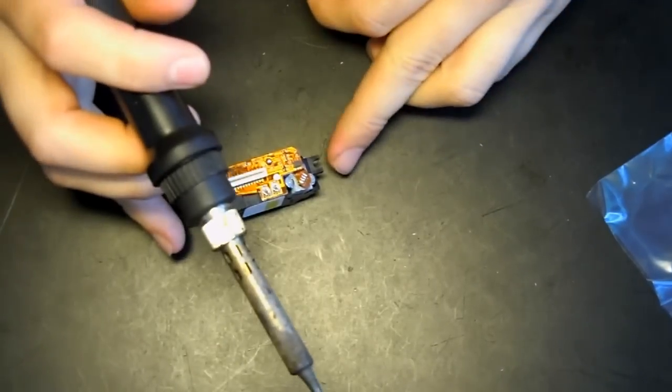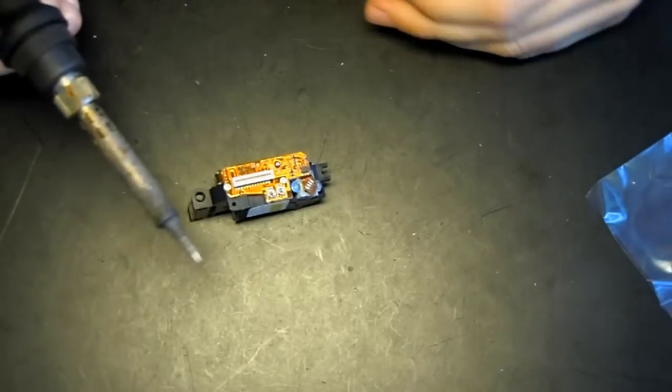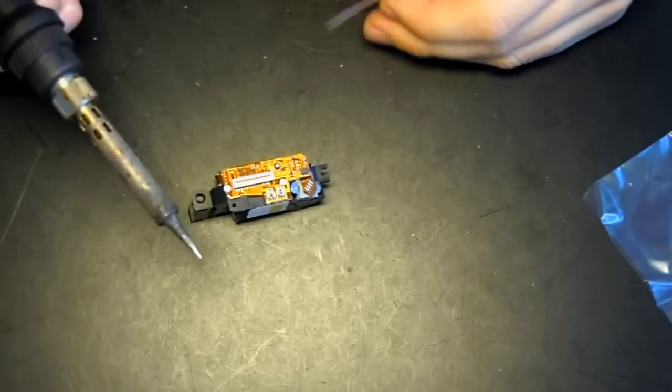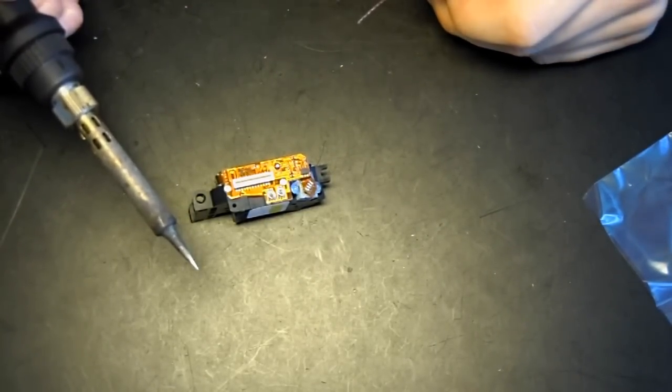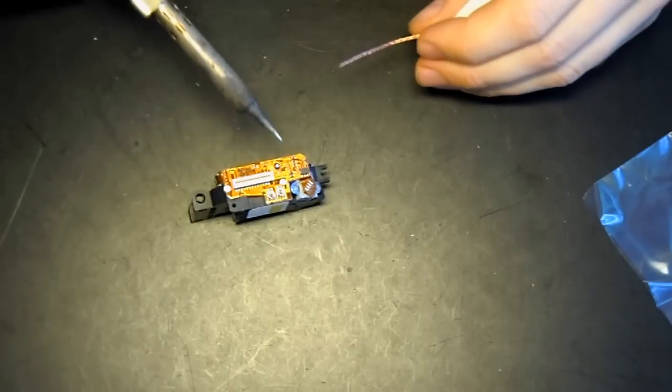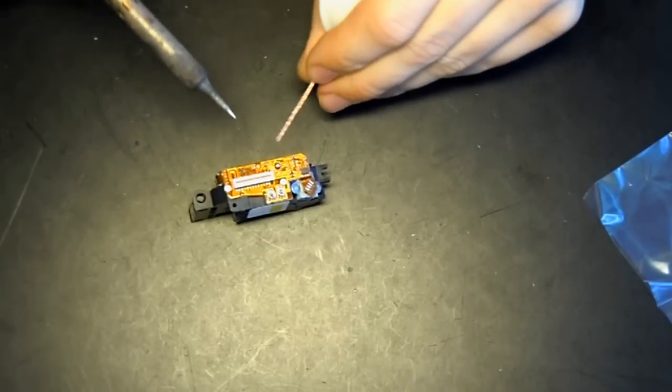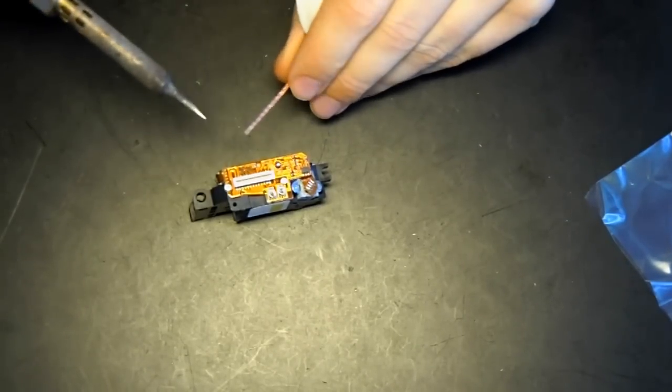If you just have a normal sort of plug-in 12w solder iron which doesn't have the temperature control on there, you may just need to leave the iron on the braid a little bit longer to allow it to heat up.